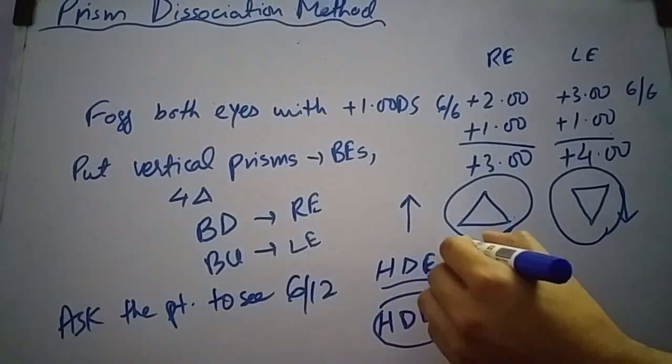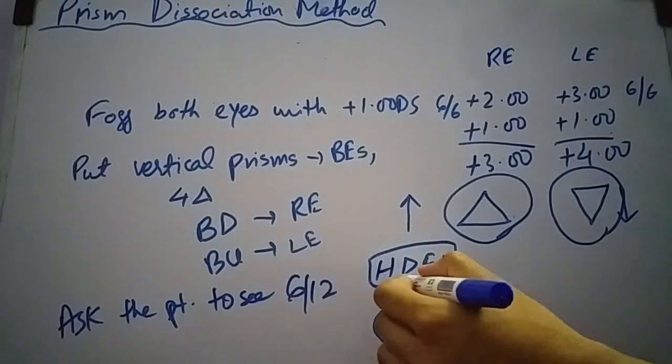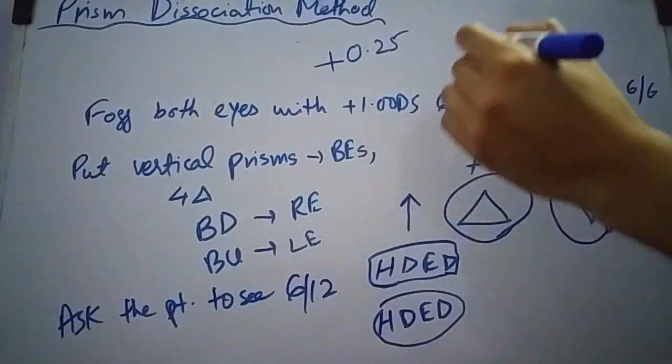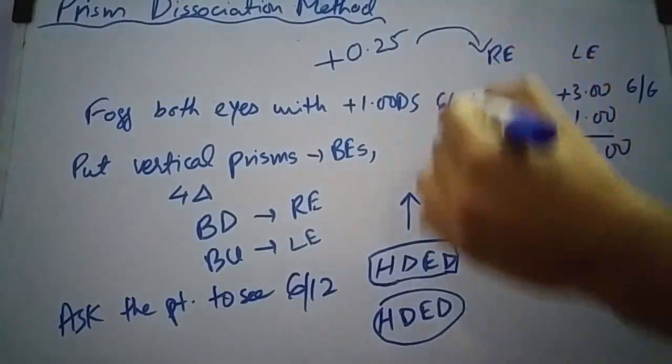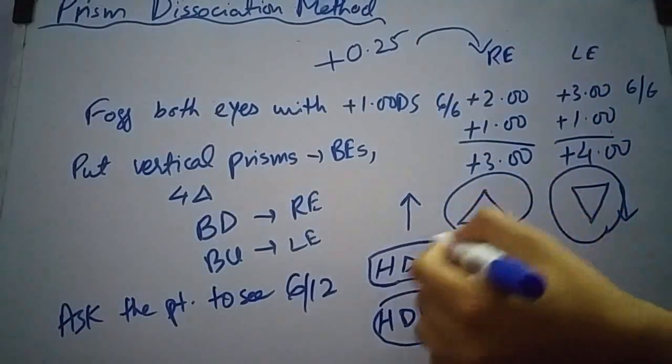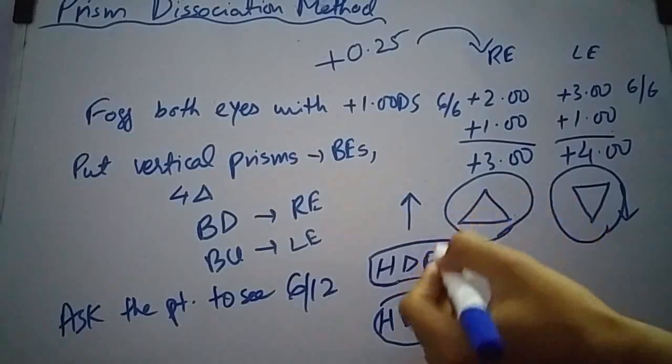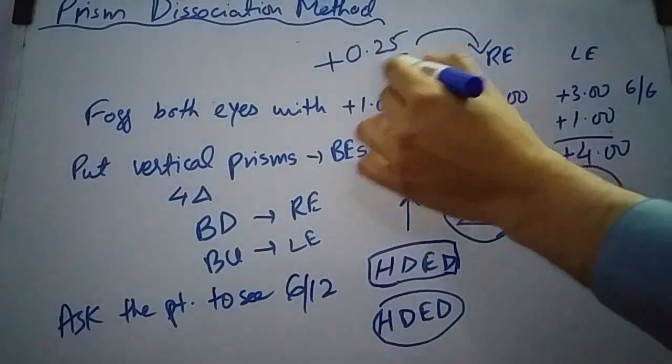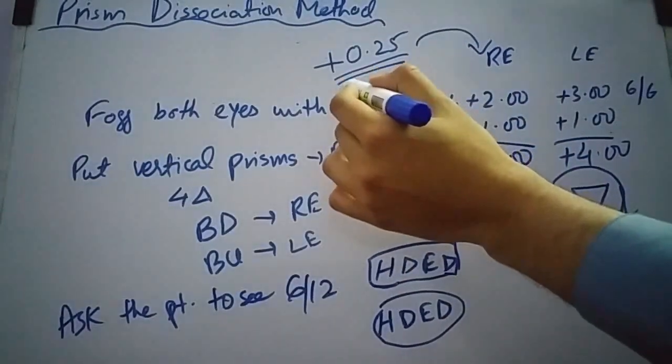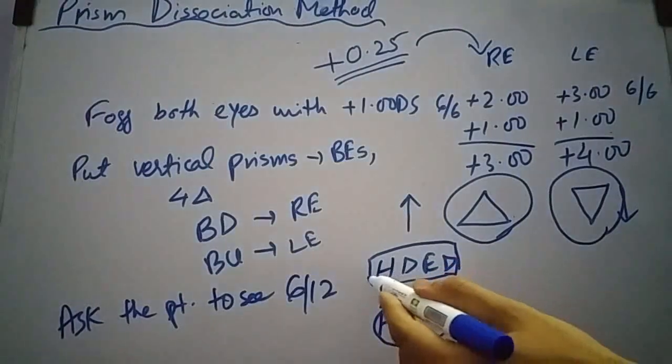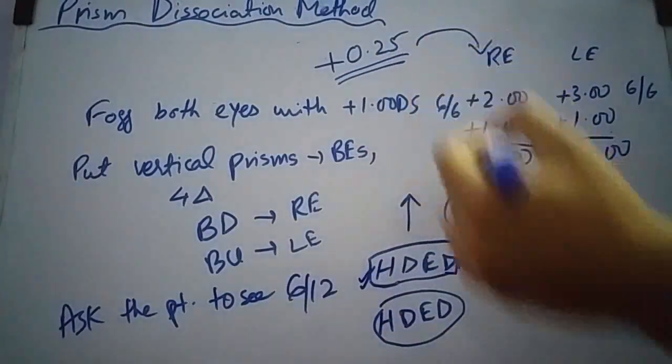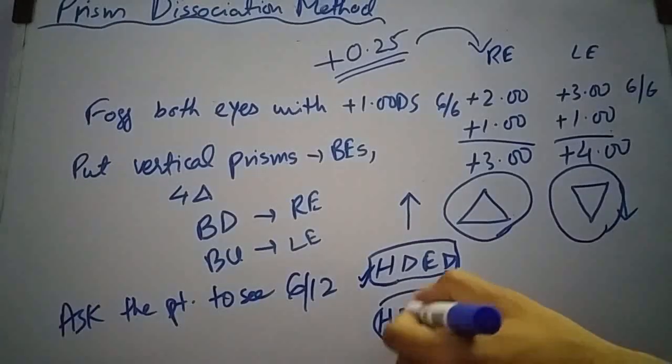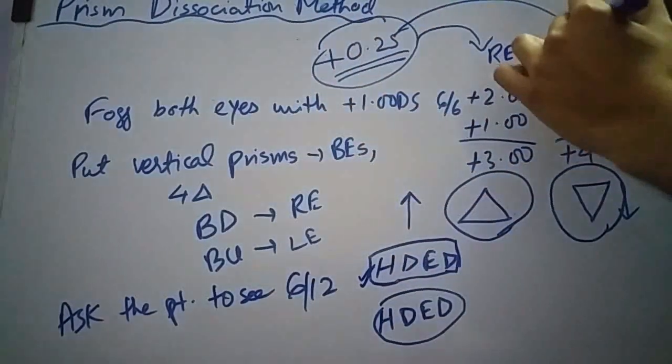If patient says that upward line is clear then add plus 0.25 in front of right eye, because this prism is moving the line in upward direction and you have to add plus 0.25 in front of the eye with better vision. If patient says that downward line is clear then add plus 0.25 in front of left eye.